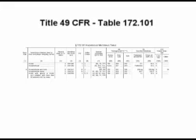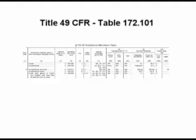Here is an example of the Department of Transportation 171.101 table found in Title 49 of the Code of Federal Regulations. You must refer to this table if you are going to ship a hazardous material or hazardous waste over commercial highways, railways, waterways, or by air. I will briefly explain the six steps one should follow when using this 10-column table.